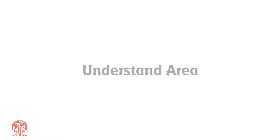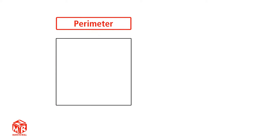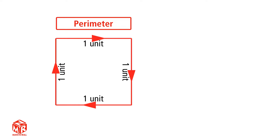Understand Area. We already know that the perimeter is the distance around a figure. It's measured in linear units or units. This square has 4 sides, each side is 1 unit, so the perimeter is 4 units.